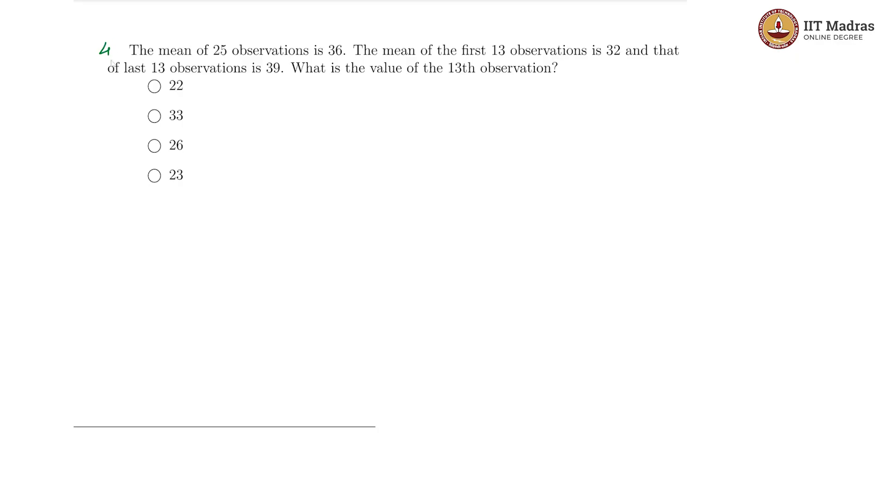For our fourth question, we are told that the mean of 25 observations is 36 and the mean of the first 13 observations is 32 and the last 13 observations is 39.